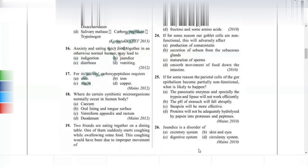Jaundice is a disorder of the digestive system. The liver comes under the digestive system. In jaundice, improper disposal of bilirubin leads to excess bilirubin stored in the blood, which is an abnormality of the liver.